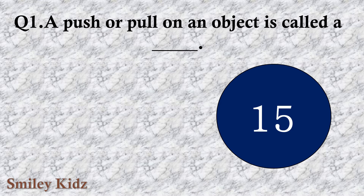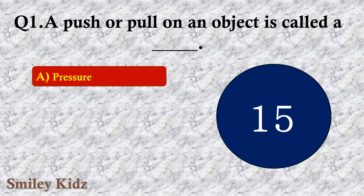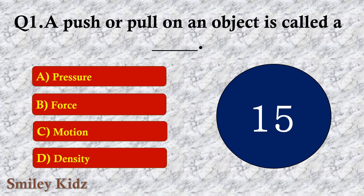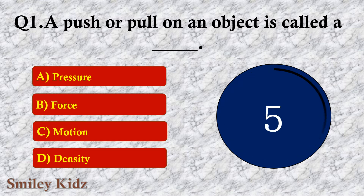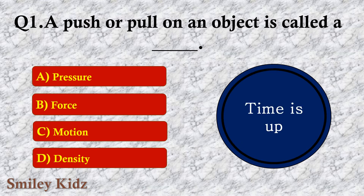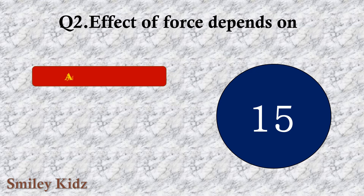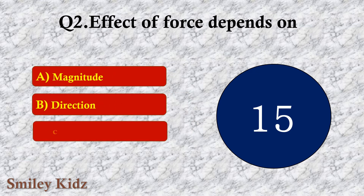Question number one: A push or pull on an object is called a dash. The options are: A. Pressure, B. Force, C. Motion, or D. Density. The right answer is option B — Force. A push or pull on an object is called a force.